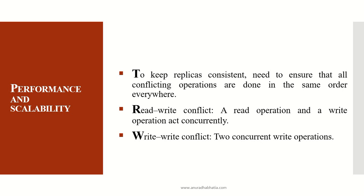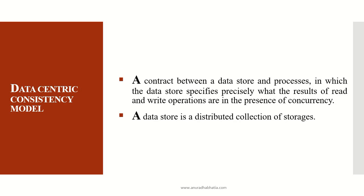For performance and scalability, to keep replicas consistent we need to ensure all conflicting operations are done in the same order everywhere. If we do write then read, that order must be followed everywhere. There are two types of conflicts: a read-write conflict, where a read and write operation act concurrently, and a write-write conflict, where two concurrent write operations happen, which can degrade performance and lead to inconsistent replicas.